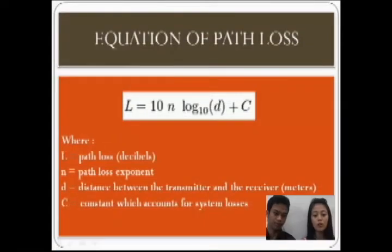The formula for path loss is L equals 10 N log10(d) plus C, where L is path loss in decibels or dB, N is path loss exponent, d is distance between the transmitter and receiver in meters, and C is constant which accounts for system losses.